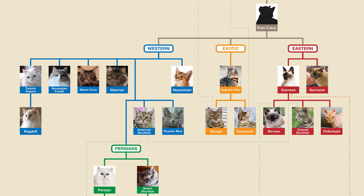Unlike dog breeds, most people cannot name more than one or two cat breeds. For example, if you ask someone to name a type of cat, they'd probably use words like tabby or tortoiseshell. But these are not breeds – these are types of fur patterns. What we're going to be looking at here, and what BasePaws looks at, is breeds, not fur patterns.